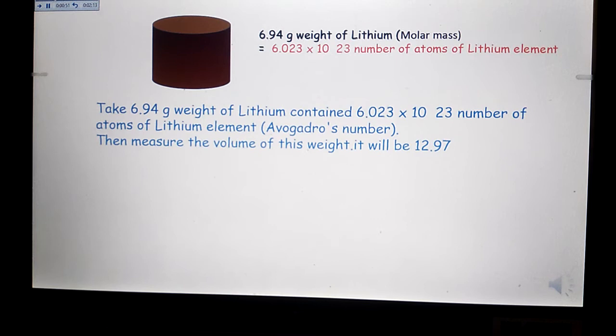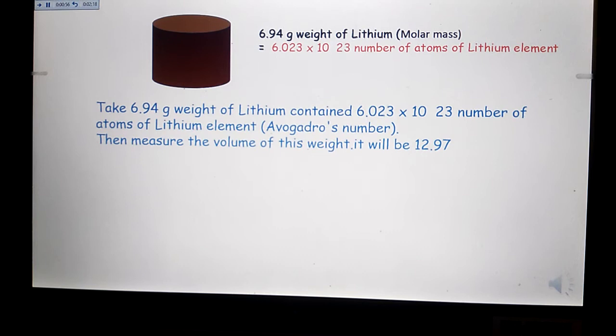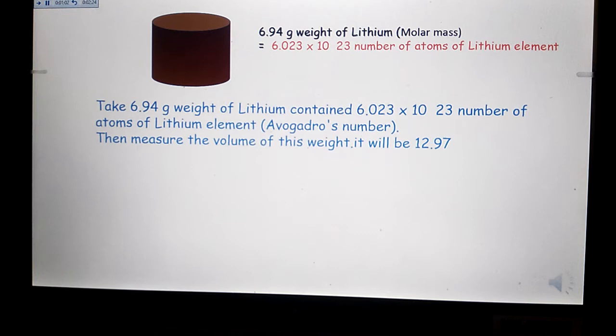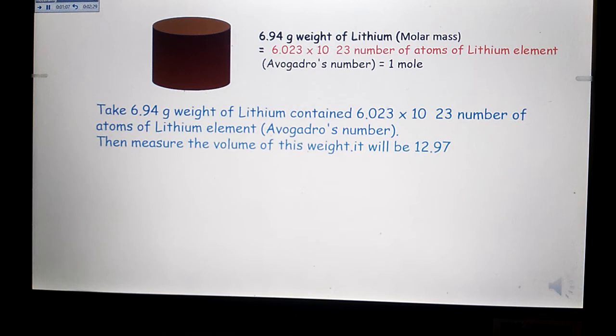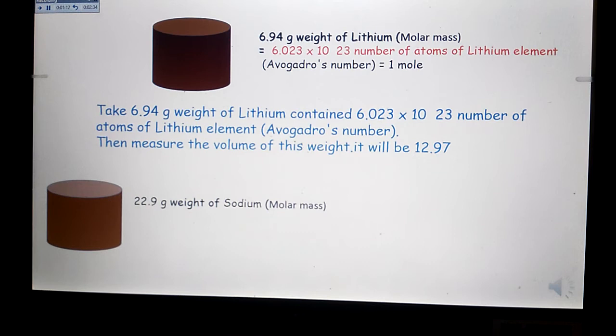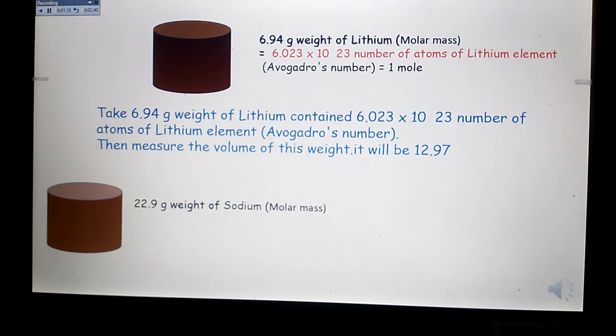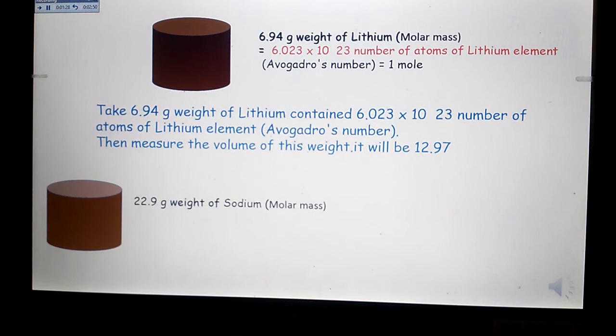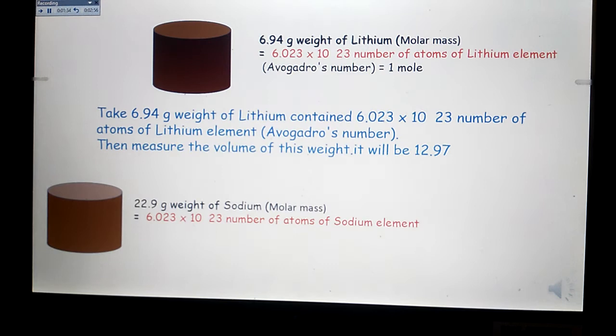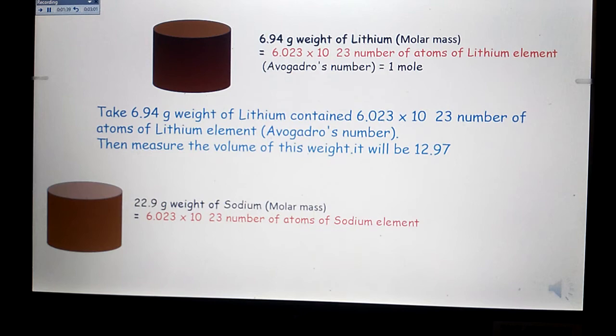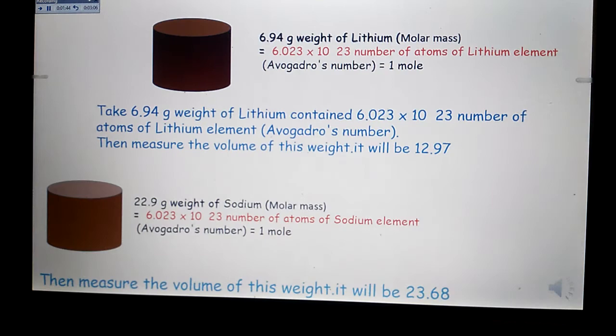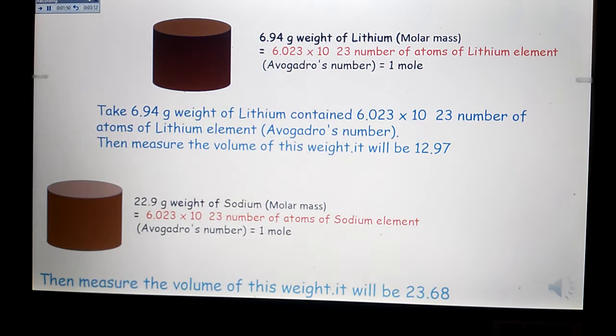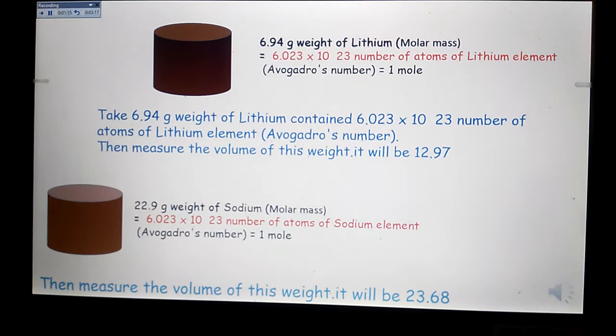In this second container, he takes 22.9 gram, the atomic weight of sodium. When we express it in grams, we call it molar mass, and it is equal to 6.023 multiplied by 10 raised to power 23 number of atoms of sodium element, which is equal to 1 mole. Now the volume occupied by this weight of sodium element is called molar volume, and it is equal to 23.68 cm³.